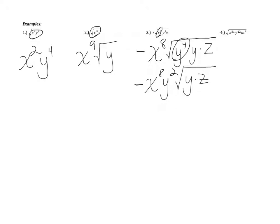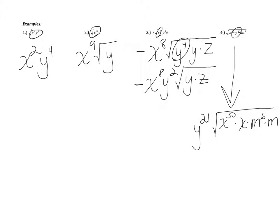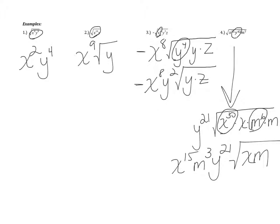For number four, I immediately pull out anything that's a perfect square. Y to the 42nd: half of 42 is 21, so I get y to the 21st. The other variables have odd exponents, so I break them up inside the radical: x to the 31st becomes x to the 30th times x, and m to the seventh becomes m to the sixth times m. I pull out half of x to the 30th, giving x to the 15th, and half of m to the sixth, giving m to the third. What's left on the inside is x and m. Anytime you have an odd exponent, you're always going to have one left over.